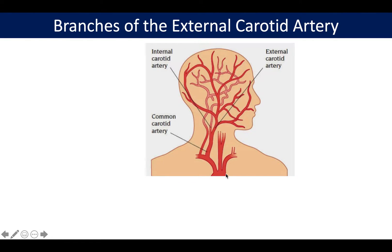So we have the arch of the aorta where my mouse is pointing to, then we have the brachiocephalic trunk first, then the left common carotid and the subclavian. On the right side, the common carotid artery comes off the brachiocephalic trunk, which then forms the common carotid, then splits into external carotid and internal carotid.